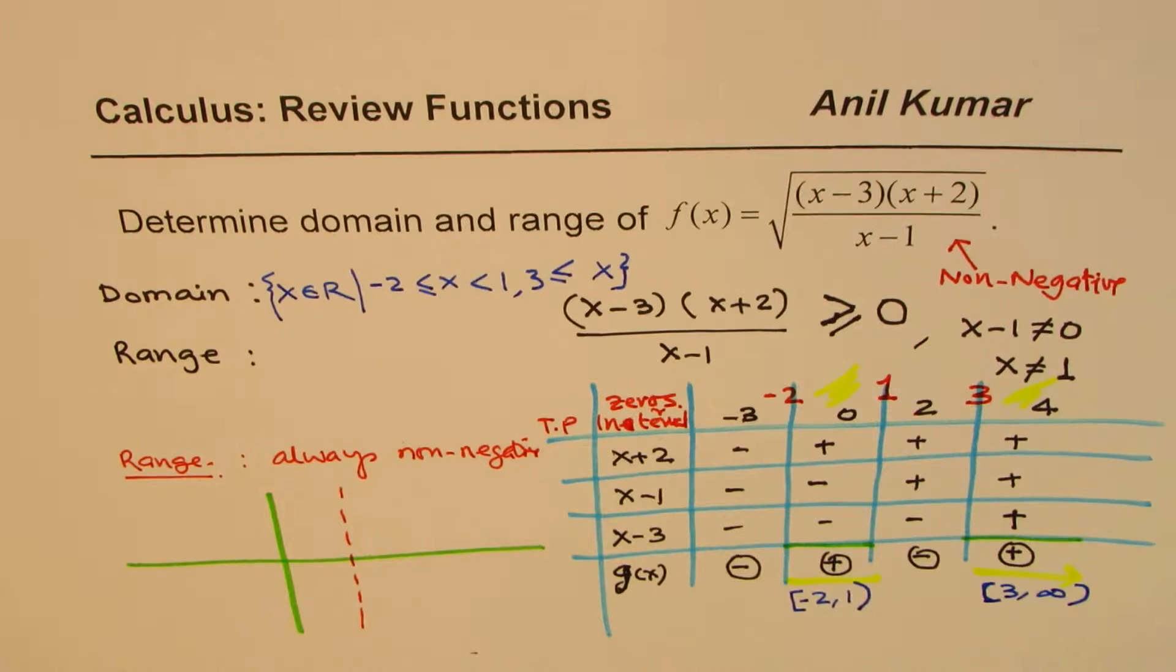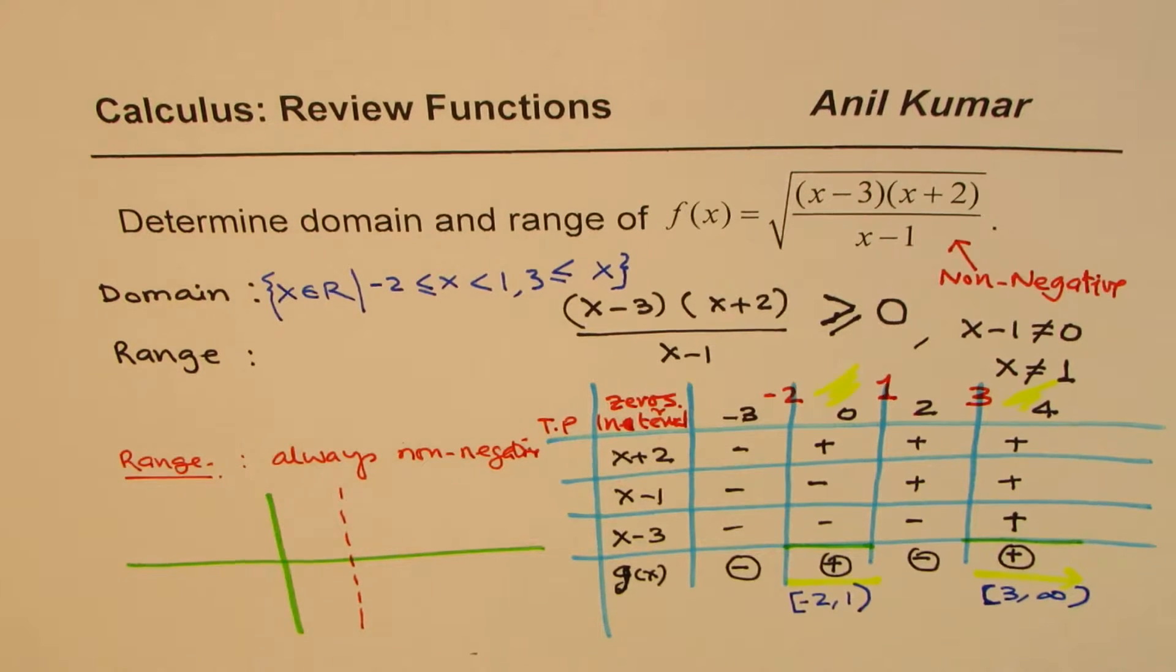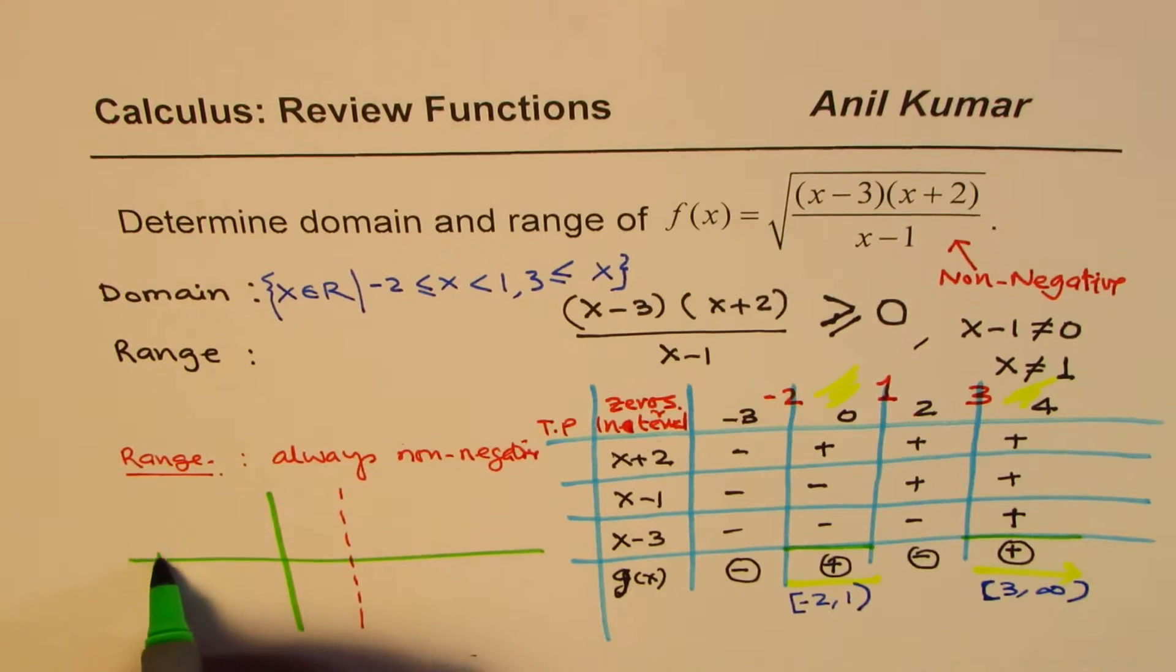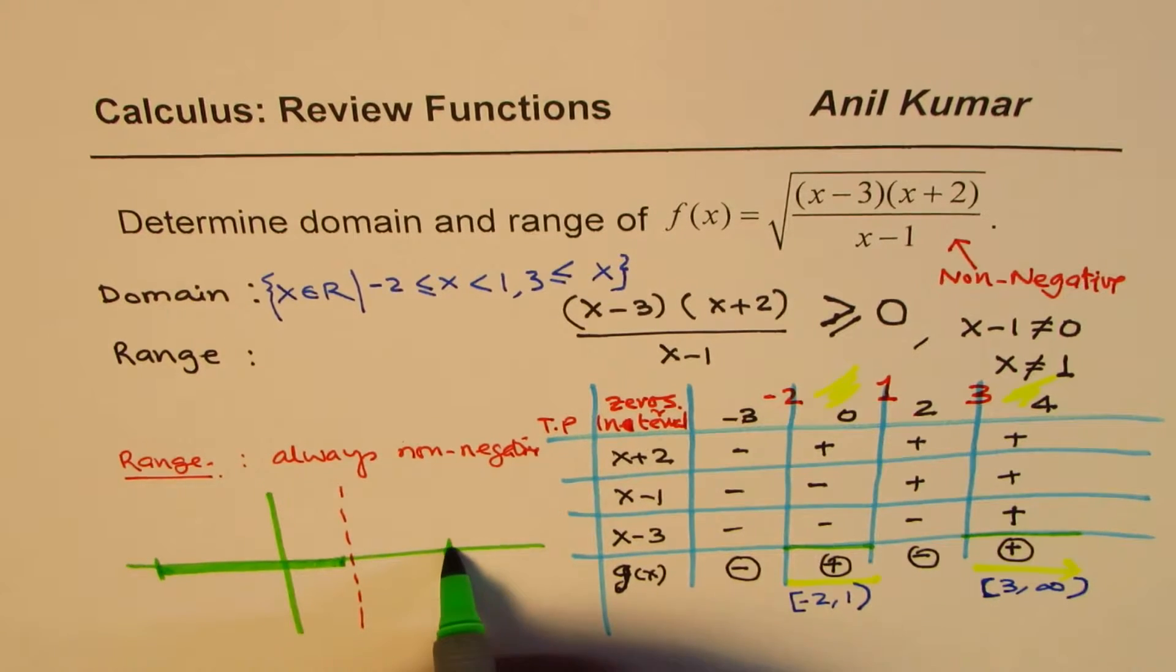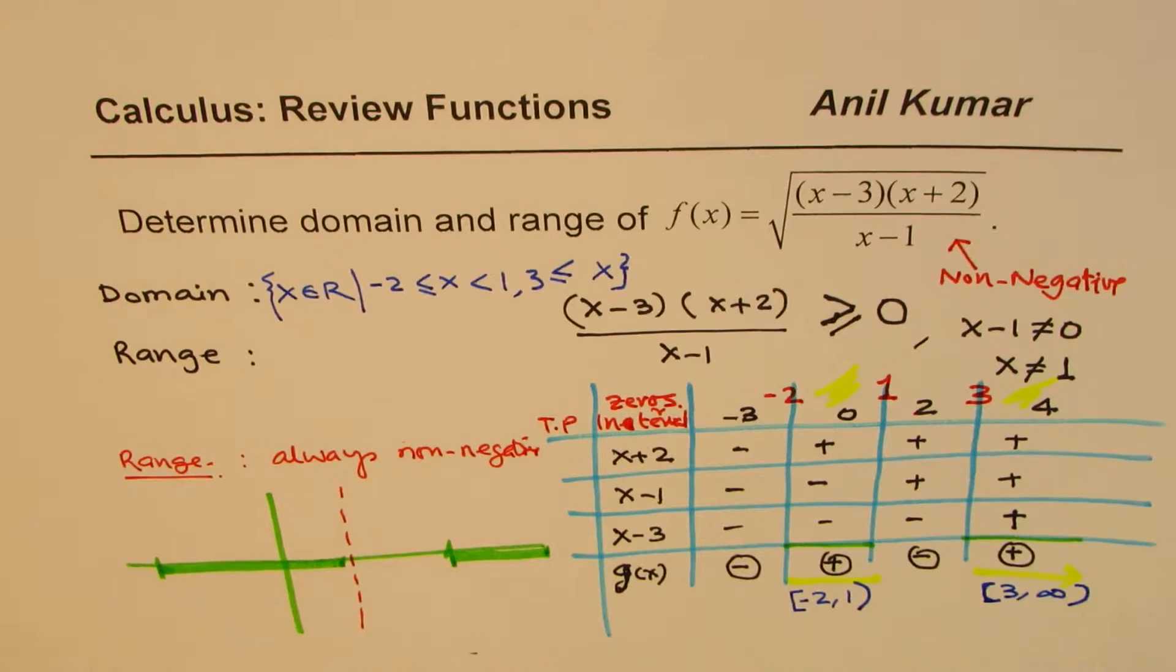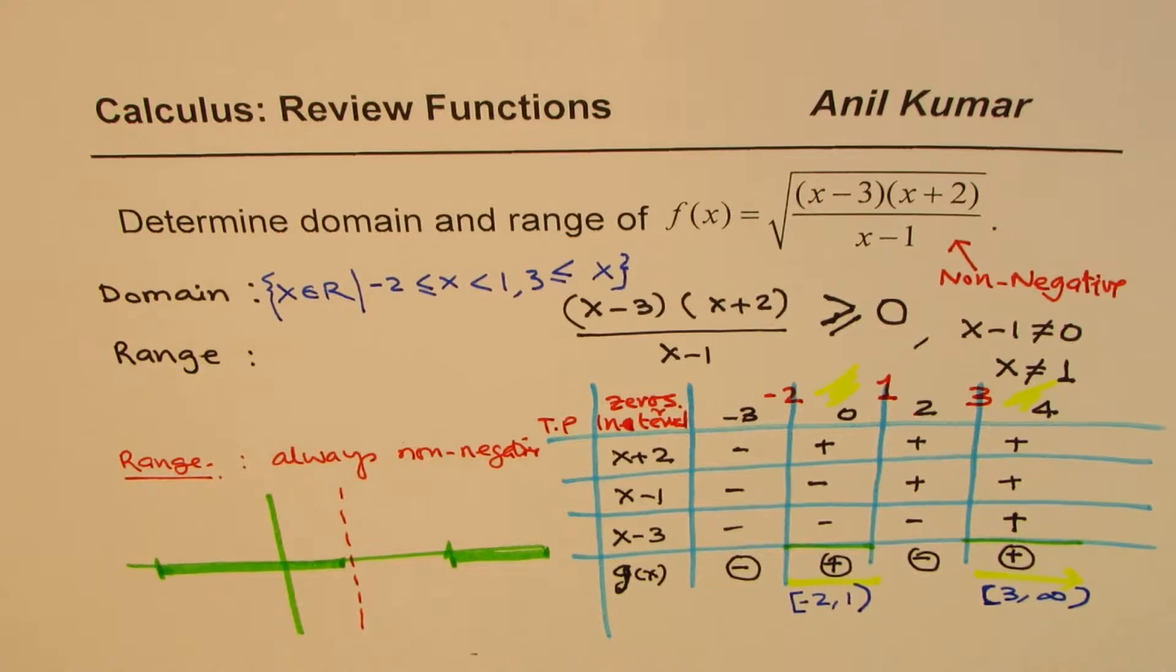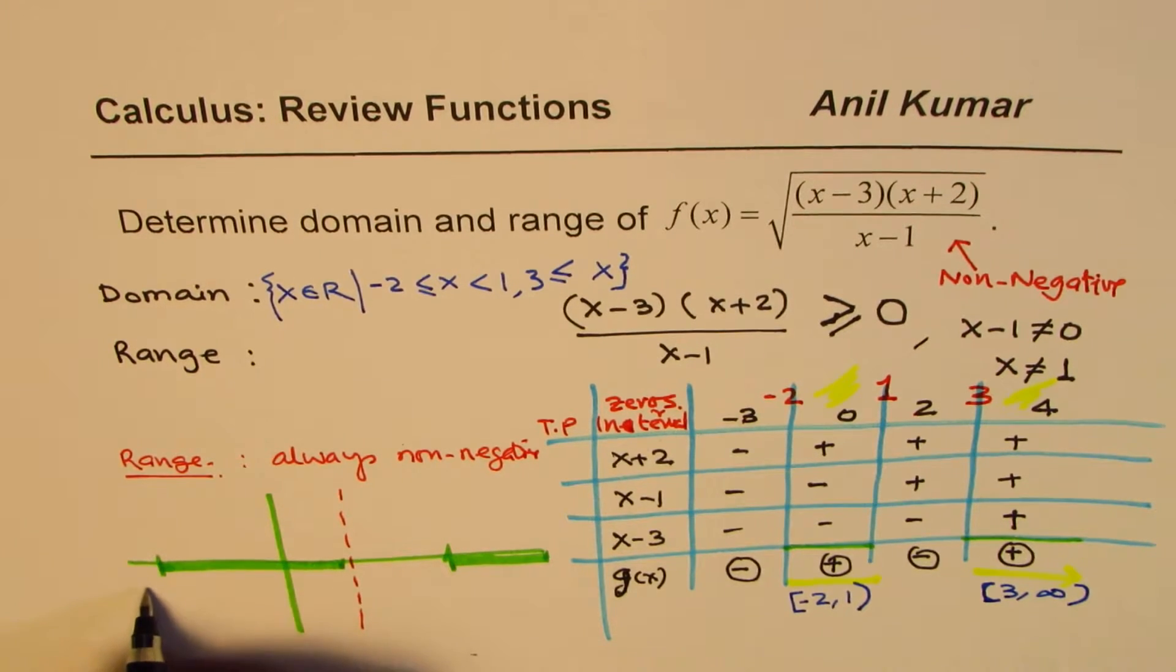So, what we have here is a vertical asymptote at 1. So, let's draw this vertical asymptote. This is at 1. And we know that the function can have values from minus 2 to 1. So, this is minus 2. So, we could have something between this interval. And then, we could have from 3 to infinity, from 3 to infinity. That is what we can have. Now, to sketch a function, we need to find the values at these boundaries.